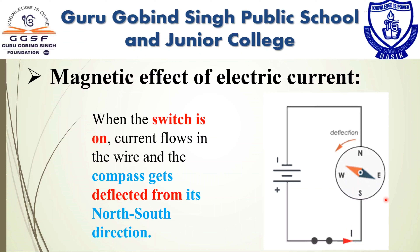In other words, electricity is producing magnetism. After this experiment, Oersted came to know that electricity and magnetism are linked. The magnetic effect of electric current is therefore known as the electromagnetic effect.